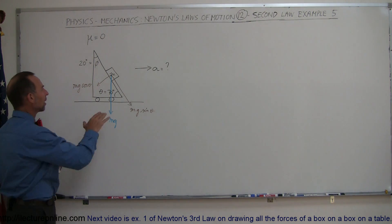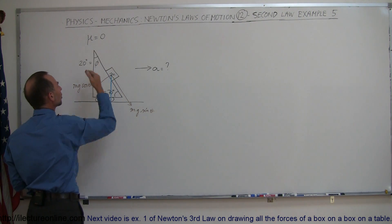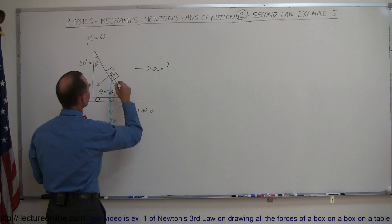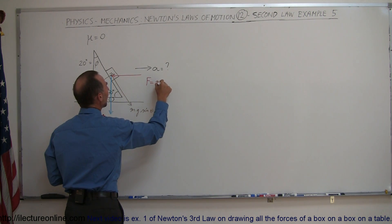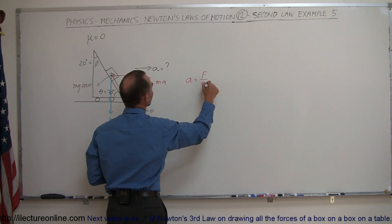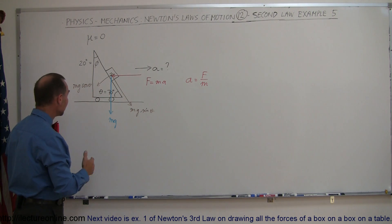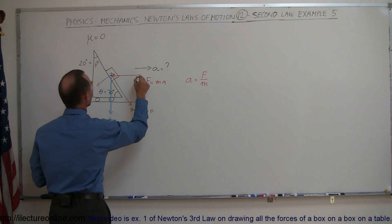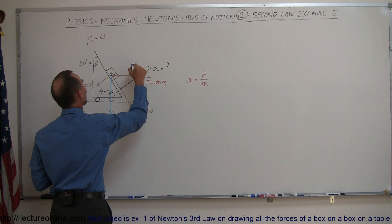But if we accelerate this wedge fast enough to the right, the block will feel an apparent force pushing it up the incline. This block would feel a force coming from the right, and using Newton's second law, F equals Ma. Since we're trying to find the acceleration, A is equal to that force divided by the mass of the object. We're going to find the perpendicular and parallel components of this force to the incline — the perpendicular component right there, and the parallel component right there.